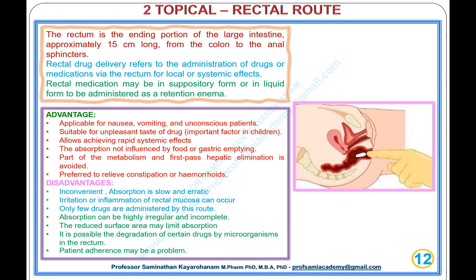Type 2, Topical: Rectal Route. The rectum is the ending portion of the large intestine, approximately 15 cm long, from the colon to the anal sphincters. Rectal drug delivery refers to the administration of drugs via the rectum for local or systemic effects. Rectal medication may be in suppository form or in liquid form as a retention enema.